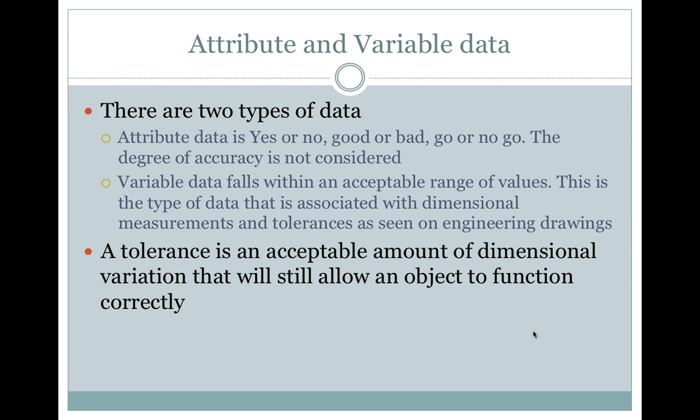Attribute and Variable Data. There are two types of data. Attribute data is yes or no, good or bad, go or no-go. The degree of accuracy is not considered. Variable data falls within an acceptable range of values. This is the type of data that is associated with dimensional measurements and tolerances as seen on engineering drawings. A tolerance is an acceptable amount of dimensional variation that will still allow an object to function correctly.